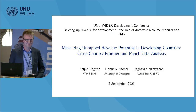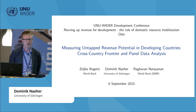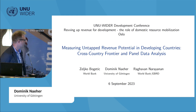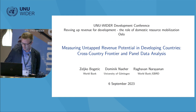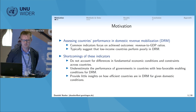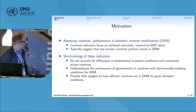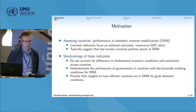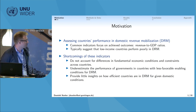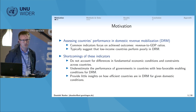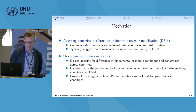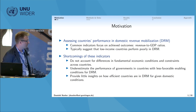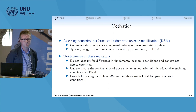I want to thank the organizers for inviting me. This work was born out of a World Bank IEG evaluation study I was working on together with Celco and Raghavan. For that work, we were looking for indicators to assess countries' performance in domestic revenue mobilization. We found that most existing indicators focus on achieved outcomes — a classic example being revenue-to-GDP ratios — and most suggest that low-income countries perform quite poorly in DRM. One main driver is that these indicators do not consider differences in the fundamental economic conditions that countries face.